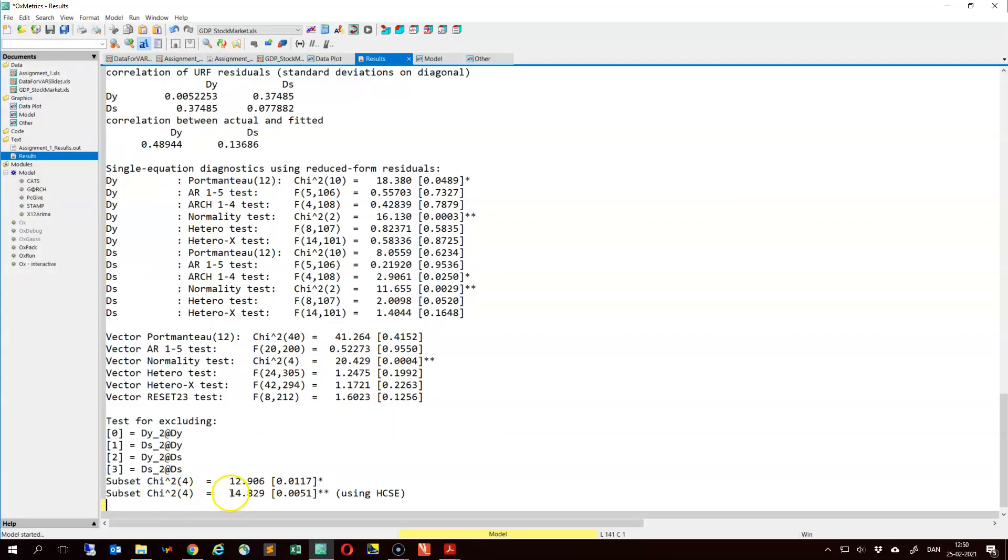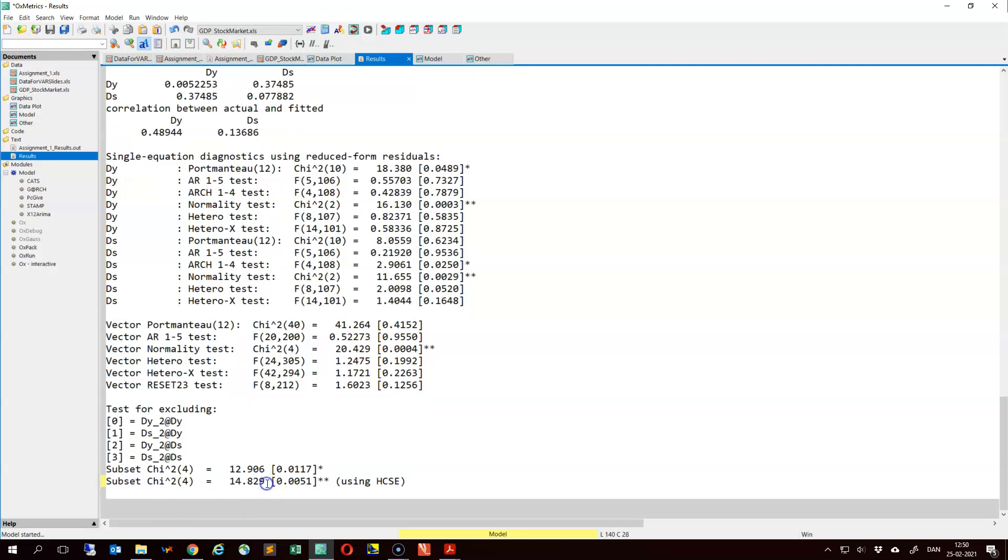So the test statistic is 14.83. And this statistic here is a robust Wald statistic. So it's a Wald statistic based on this heteroscedasticity-consistent covariance matrix for the maximum likelihood estimator. We get a p-value that is extremely small. So this suggests that we should reject the null hypothesis that all of these coefficients in the pi_2 matrix can be set equal to zero. So it suggests here that we should keep the lag order of 2 in this VAR model. So we cannot reduce the model from a VAR(2) to a VAR(1).